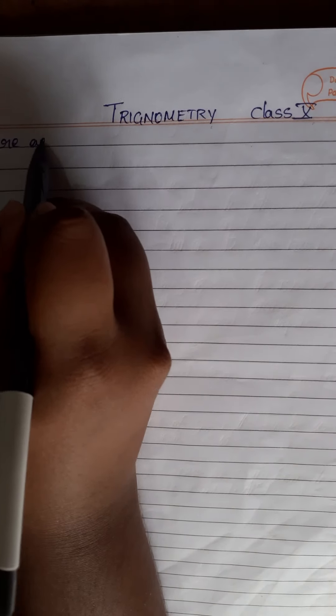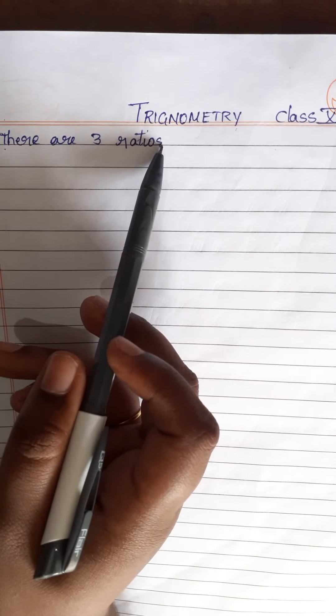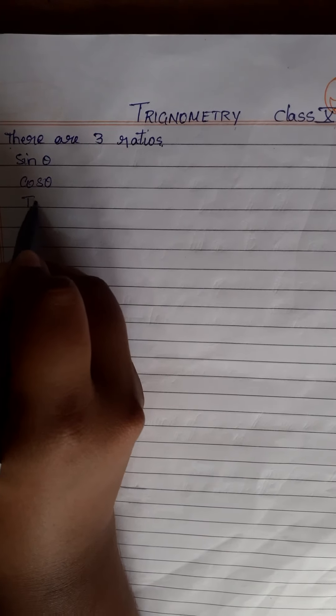There are 3 trigonometric ratios. What are those ratios? Sine theta, cos theta, and tan theta. These are the three trigonometric ratios: sine theta, cos theta, tan theta.